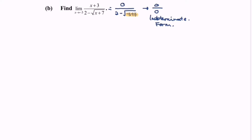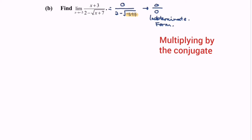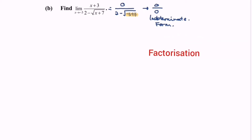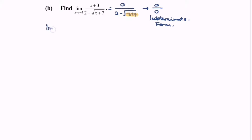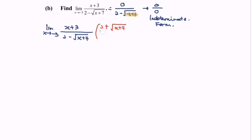There are 3 strategies to solve this: Number 1, multiply with the conjugate. Number 2, factorize. Number 3, long division. My suggestion for this question is to multiply with the conjugate. So we write the limit when x approaches negative 3 for (x plus 3) over (2 minus square root of (x plus 7)), multiplied by the conjugate (2 plus square root of (x plus 7)) over (2 plus square root of (x plus 7)).